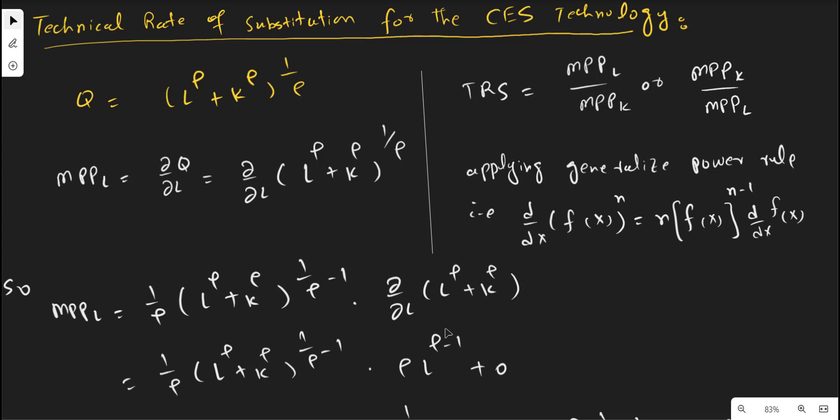You then multiply by the first derivative of the function inside the brackets. The function inside the bracket is equal to alpha times x. In our case, the power is reduced by one. The derivative of the capital term with respect to labor is zero since there is no labor in it. For the labor term, we apply the power rule: the power multiplies with the coefficient and is reduced by one. This gives us the marginal physical productivity of labor.